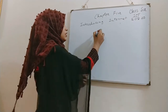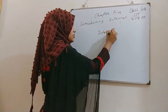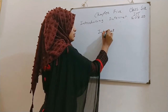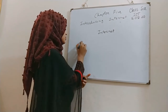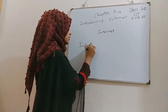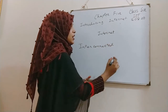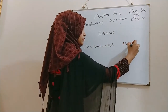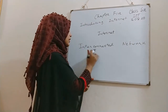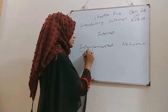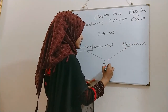So what is internet? This word is originated from two words: interconnected and network. From interconnected, 'inter' is taken, and from network, 'net' is taken. So it becomes internet.